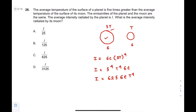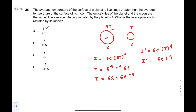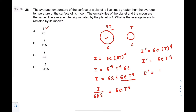Now let the intensity of the moon be I'. So I' = sigma e T⁴. We want the answer in terms of I. From the planet's intensity equation, sigma e T⁴ equals I divided by 625. Therefore I' equals I by 625. The correct option is option C.